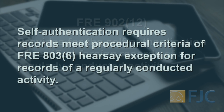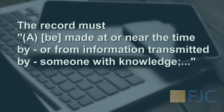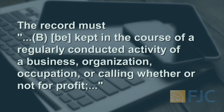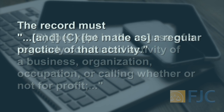In turn, self-authentication requires that the record meets the procedural criteria of the Rule 803 Section 6 hearsay exception for records of a regularly conducted activity. Specifically, the record must: (a) be made at or near the time by or from information transmitted by someone with knowledge; (b) be kept in the course of a regularly conducted activity of a business, organization, occupation, or calling, whether or not for profit; and (c) be made as a regular practice of that activity.